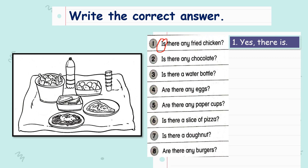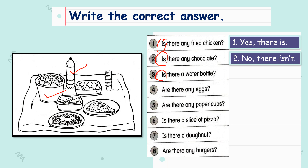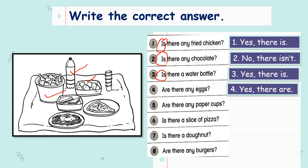Number two: is there any chocolate? Did you see any chocolate from the picture? No, right? So your answer should be no, there isn't. What about number three? Is there a water bottle? Yes, so the answer would be yes, there is. Number four: are there any eggs? You are right, the answer is yes, there are — because the question starts with are. Number five: are there any paper cups? Yes, very good — yes, there are.